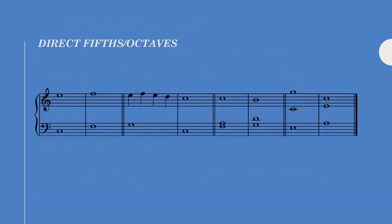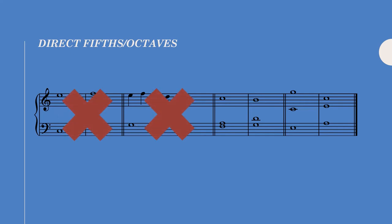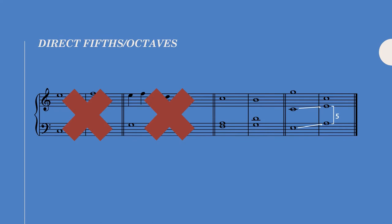A direct fifth or octave is when an imperfect interval moves to a perfect interval by similar motion. Direct fifths and octaves are not allowed between the lowest and highest voice. They are allowed among any other combination of voices if either one of the voices moves by step — so this direct fifth is okay because the G moves by step — or if both voices leap, but one of the notes in the second fifth or octave has a harmonic note in common with the triad of the previous chord. In this example, the direct fifth is leapt into, but because this E is also a chord tone in the previous triad, it's allowed.